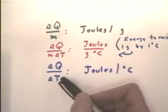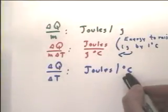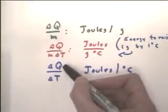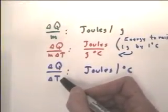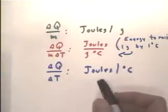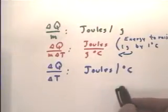Alternatively, we could do delta-Q over delta-T, the number of joules per Celsius degree. If we divide the number of joules of energy change by the temperature change, we find out how many joules it takes to change for every Celsius degree.